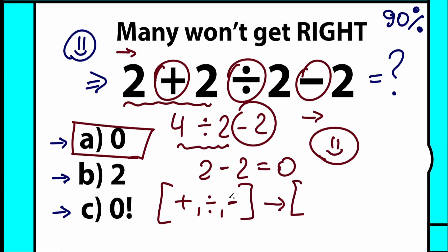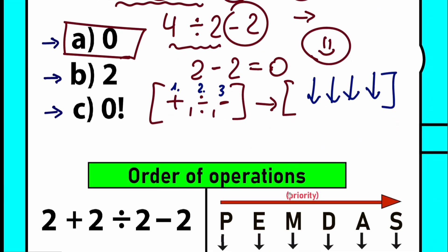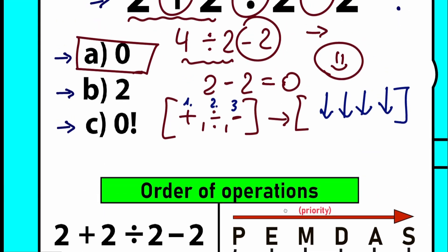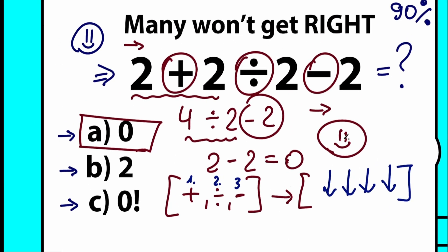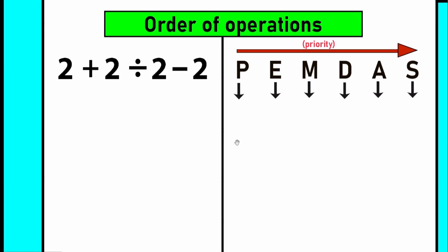We need to establish, for example, 100%: addition first, division second, or subtraction third — we need to order all of this. And to order this, we need to know a really important part of math: a really important algorithm, a really important principle. Here you can see our order of operations. On the right side, we have our PEMDAS order of operations. Each of these letters stands for something, and we go from left to right because the left side has higher priority.